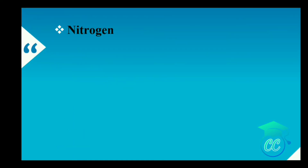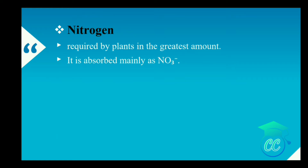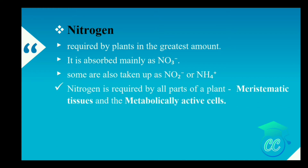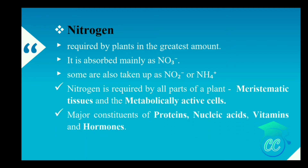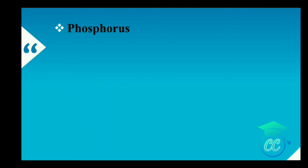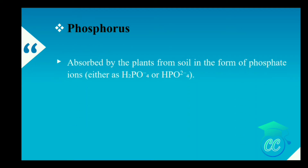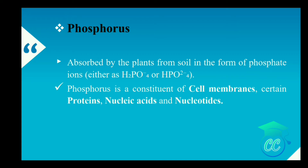First, nitrogen. Nitrogen is required by the plant in the greatest amount. The plant uptakes nitrogen mainly in the form of nitrate ions, and there are also plants which uptake nitrogen in the form of nitrite or ammonium ions. Nitrogen is present in every part of the plant such as the meristematic tissues and metabolically active cells, and is a major constituent of proteins, nucleic acids, vitamins and hormones. Second, phosphorus. Phosphorus is absorbed by the plant in the form of phosphate ions. It forms a major constituent of cell membranes and is contained in certain proteins, nucleic acids and nucleotides. Phosphorus is required for all phosphorylation reactions.